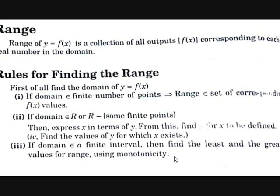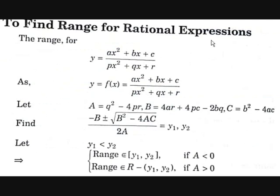Now let's see how to find the range of rational functions — that is, the division of two functions. To find the range of y = f(x) = (ax² + bx + c) / (px² + qx + r), let A = q² − 4pr (the discriminant of the denominator) and let B = 4ar + 4pc − 2bq, and C = b² − 4ac (the discriminant of the numerator).